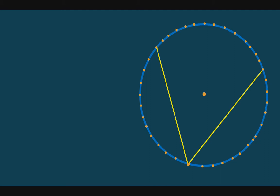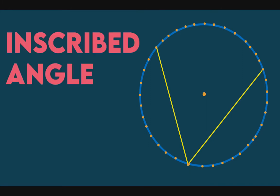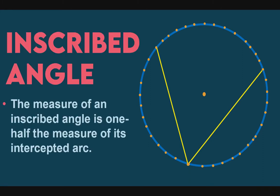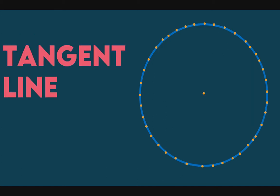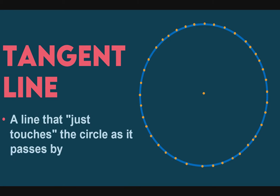Next, this one. The vertex is no longer at the center — it is on the circle, just like the endpoints of its rays. So this is called an inscribed angle. The measure of an inscribed angle is one half the measure of its intercepted arc. So again, whatever the measure of the arc is, divide it by two — that will be the measure of our inscribed angle.